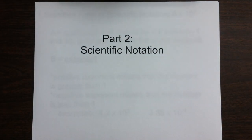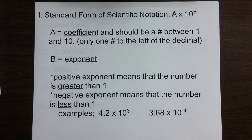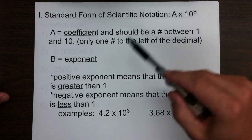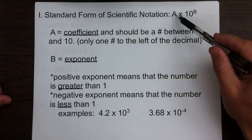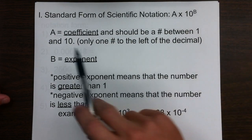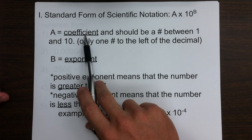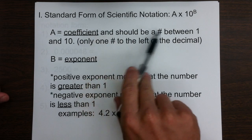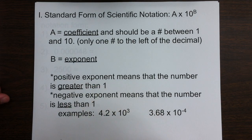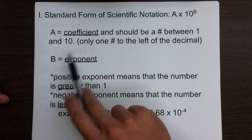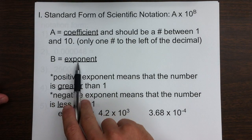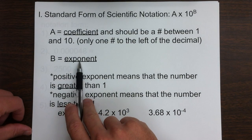This is Unit 2, Part 2: Scientific Notation. We've seen scientific notation before in this unit. It's a number in the form of a times 10 to the b, where we call a the coefficient. This is going to be a number between 1 and 10, and then it's multiplied by 10 to a power, given by b, which is the exponent.